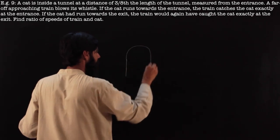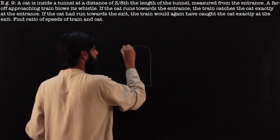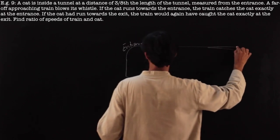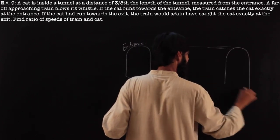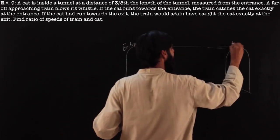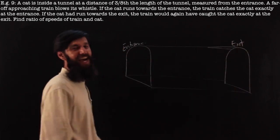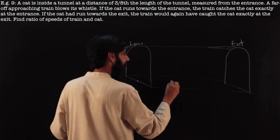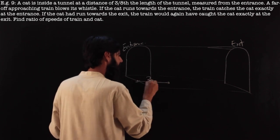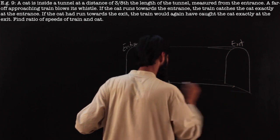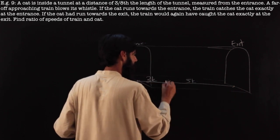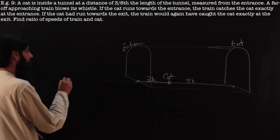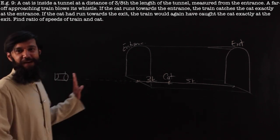Let me draw a picture. This is your entrance and the tunnel. Here's your tunnel — this is your exit. The cat is at 3/8 the length of the tunnel. So if this is the entrance, the cat is here: this distance is 3K, the total distance is 8K, so the rest of the distance is 5K. So here is your cat, this is your tunnel, and a train which is approaching the entrance.